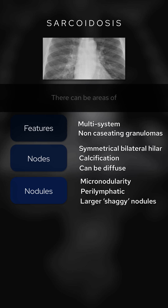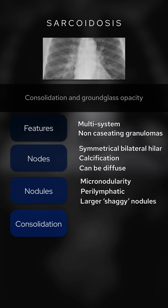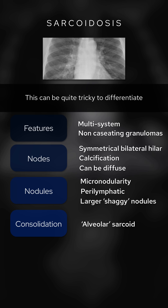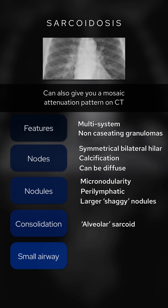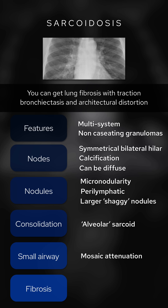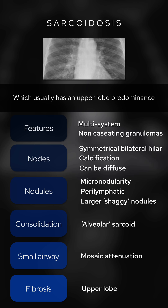There can be areas of consolidation and ground glass opacity. It's worth noting there is a variant of sarcoid that presents with multifocal consolidation known as alveolar sarcoid, which can be quite tricky to differentiate from other causes of multifocal consolidation. Small airway involvement can give a mosaic attenuation pattern on CT, and with progressive disease you can get lung fibrosis with traction bronchiectasis and architectural distortion, which usually has an upper lobe predominance.